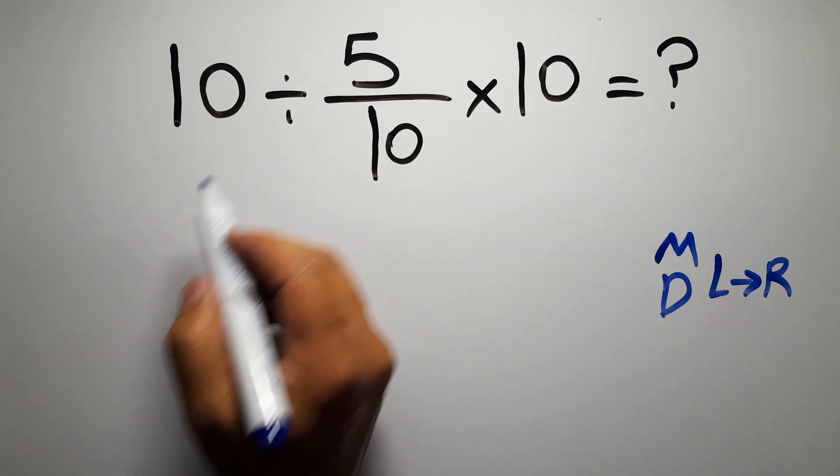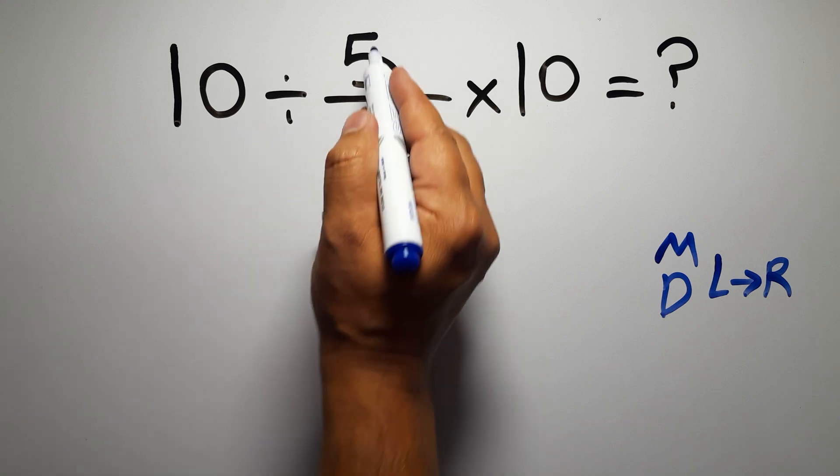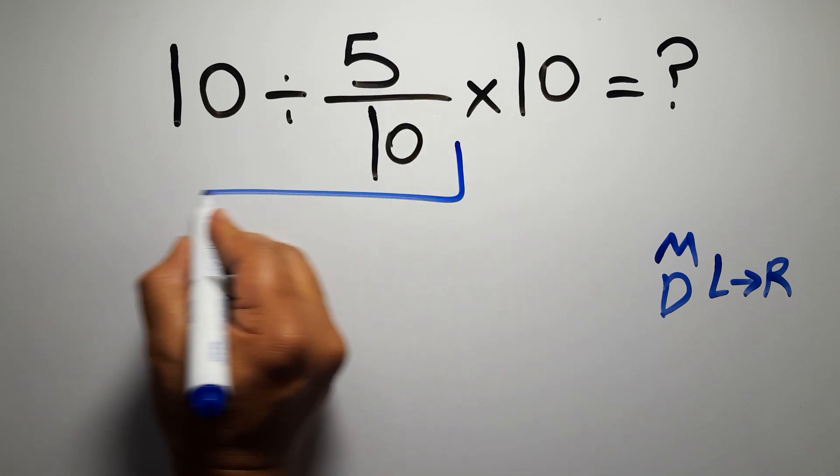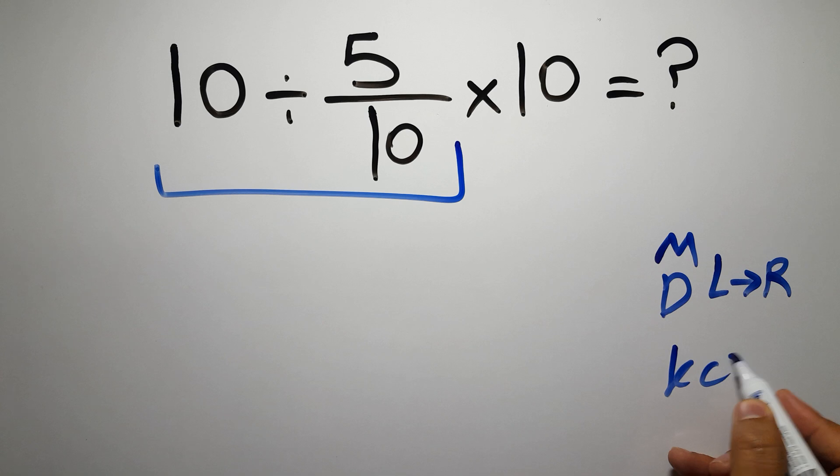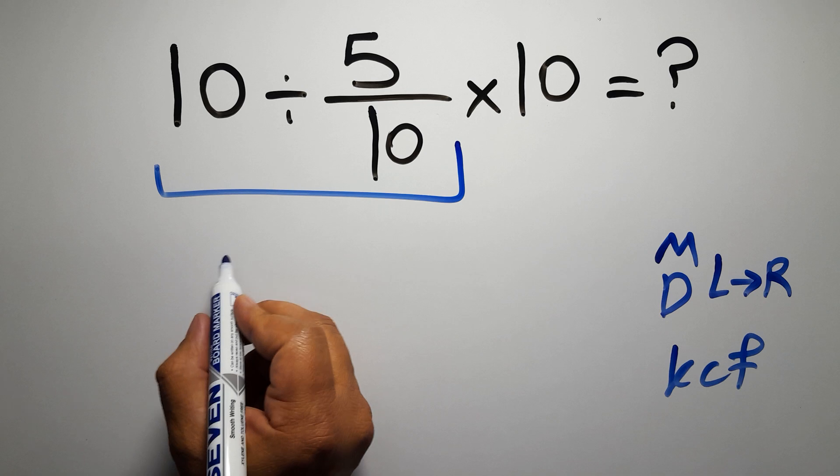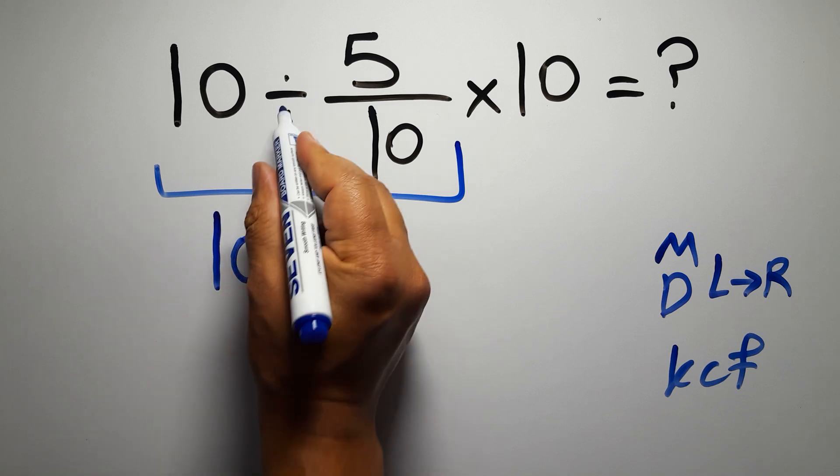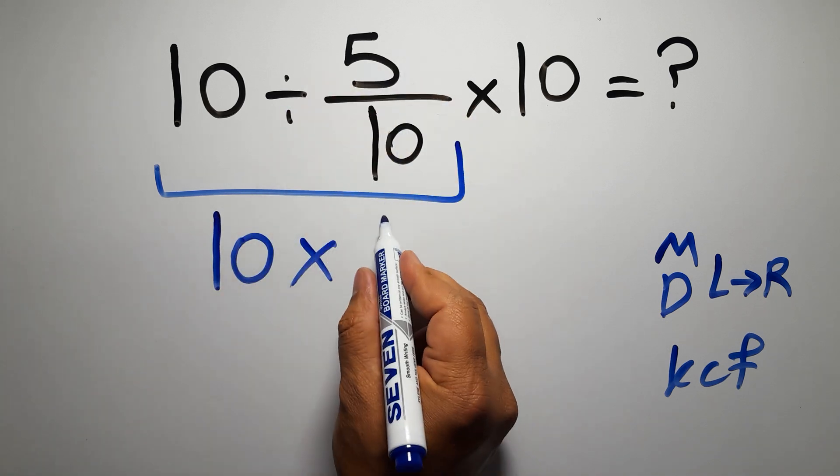So first this division, 10 divided by 5 over 10. According to the KCF rule, K stands for keep, C stands for change, and F stands for flip. We can write keep the first fraction, change division to multiplication, and flip the second fraction.